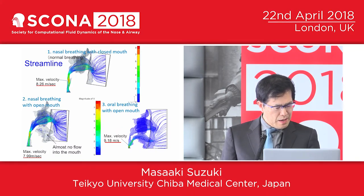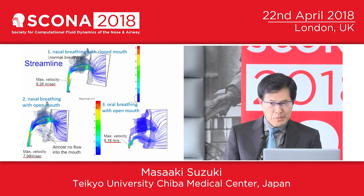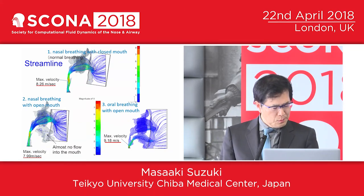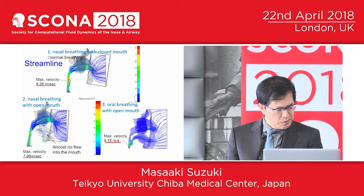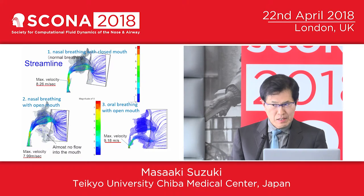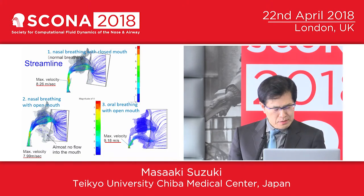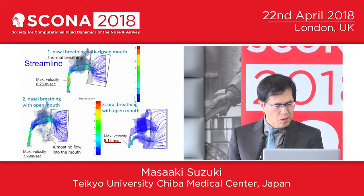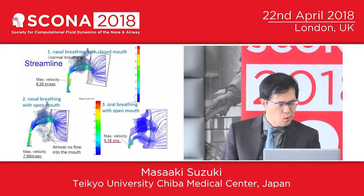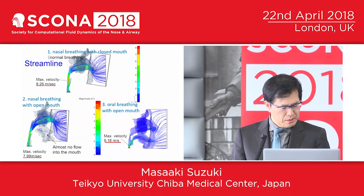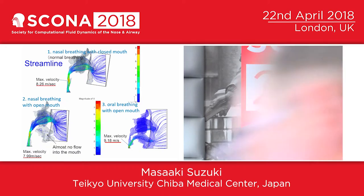This slide shows the airflow imaging and velocity contours during inspiration. Maximum velocity during nasal breathing with closed mouth and nasal breathing with open mouth were 8.26 and 7.99 meters per second respectively. These two velocities showed similar results, suggesting that mouth opening does not lead to pharyngeal collapse as long as nasal breathing is maintained. Almost no flow into the mouth was seen during nasal breathing with open mouth. In contrast, the airflow during oral breathing with open mouth became the highest rapid stream, as high as 9.18 meters per second.